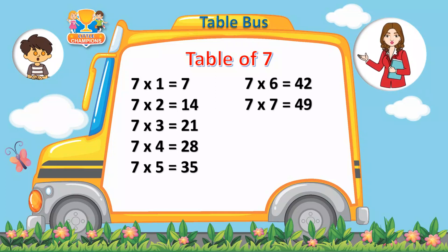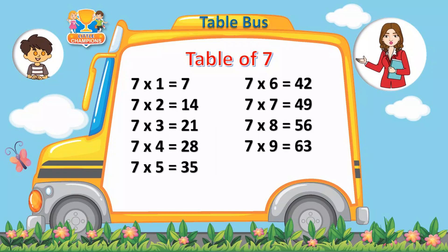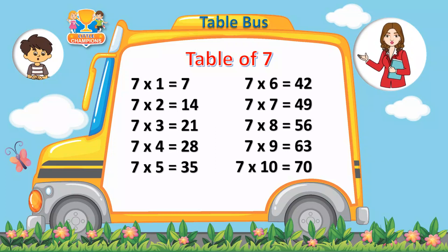7 7s are 49. 7 7s are 49. 7 8s are 56. 7 8s are 56. 7 9s are 63. 7 9s are 63. 7 10s are 70. 7 10s are 70.